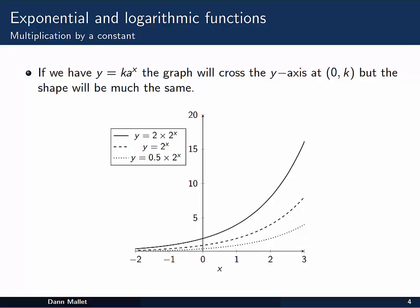If we multiply functions like a to the x by some constant, like we see here with the k, the graph simply crosses the y-axis at 0, k instead of 0, 1. So you can see here, as k increases, the y-intercept moves up the y-axis. The function is also amplified in the same way at every other x value as well.